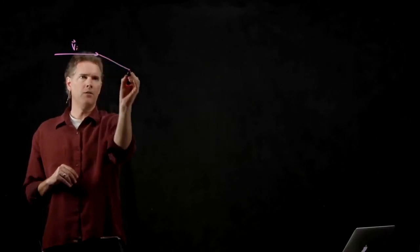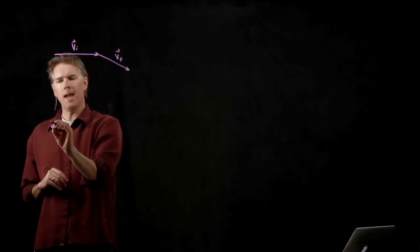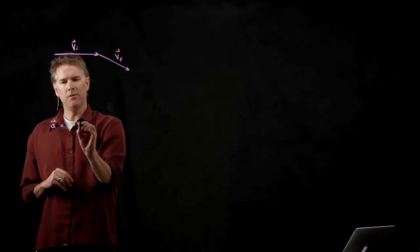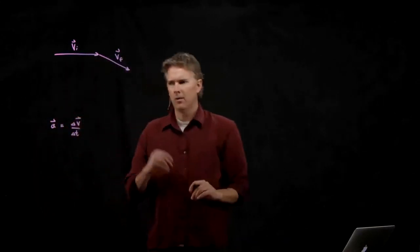So if this is my vi and this is my vf, and we're looking for a, which is delta v over delta t, how do I do that?